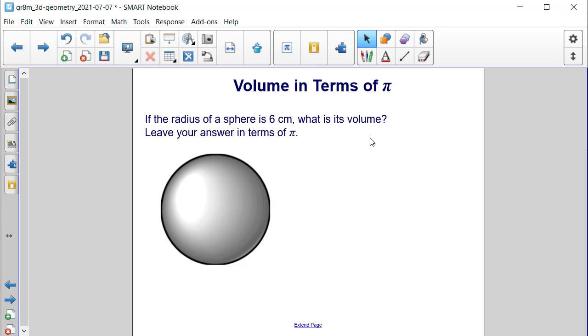If the radius of a sphere is 6 centimeters, what is its volume? Leave your answer in terms of pi.